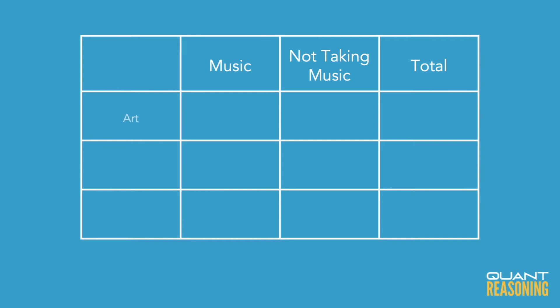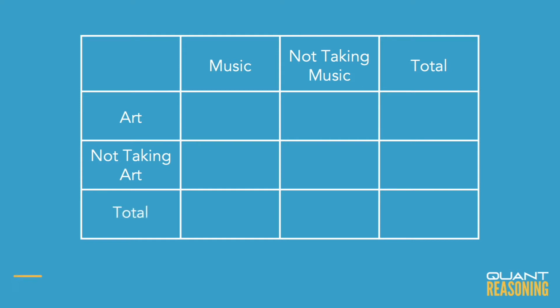You're going to have your row for art, whether they take music or not. You're going to have your row for not art, whether they take music or not. And you're going to have your total row.